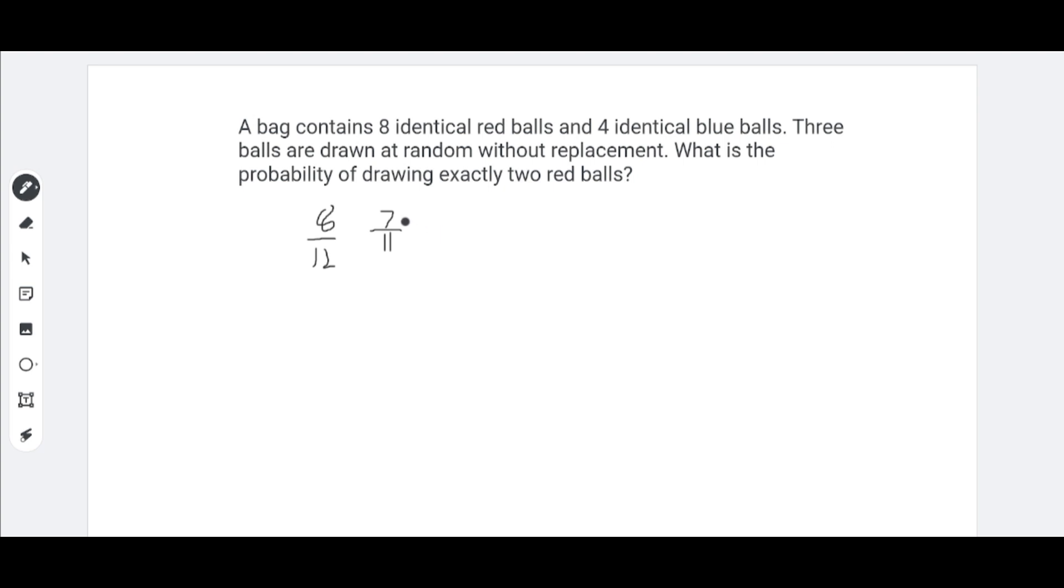Now, the third time, we do not want a red ball because we want to draw exactly two red balls. So, you have to find the probability of not getting a red ball. So, there are four blue balls left and six red balls left. So, there are four out of 10 chances that we'll get a blue ball, which is not a red ball. So, we have to multiply by 4 out of 10.